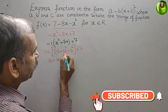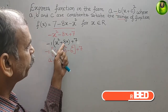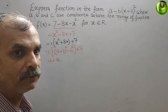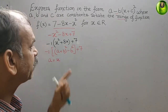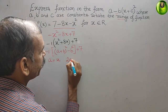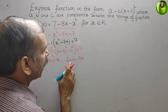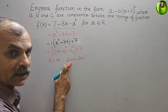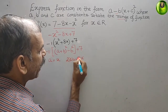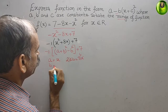To find b, we look at the 8x term. This is nothing but 2ab. So 2ab equals 8x. Since a is x, the x terms cancel, giving 2b equals 8, therefore b is equal to 4.